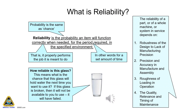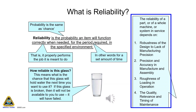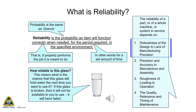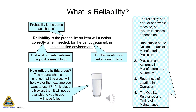The slide tells us the reliability of a part or of a whole machine or system in service depends on the following: robustness of the design to lack of manufacturing precision; precision and accuracy in manufacture and assembly; roughness of loading and operation; and the quality, relevance and timing of maintenance.